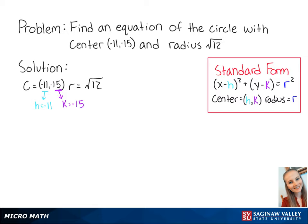we can write our equation as (x + 11)² + (y + 15)² = (√12)².